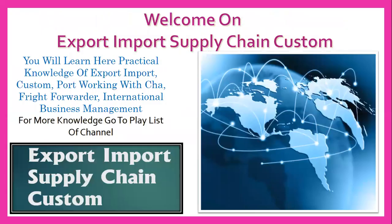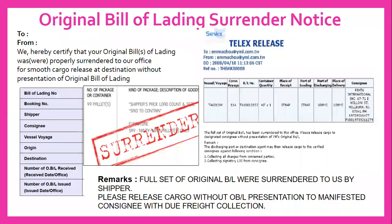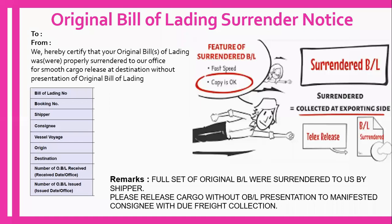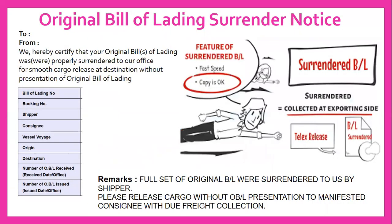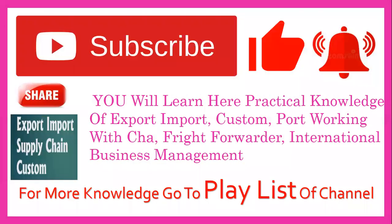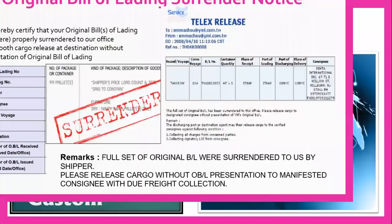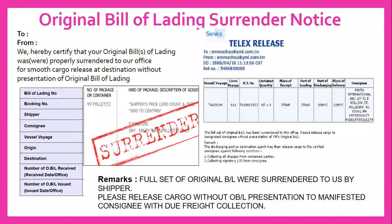Such kind of problem can be resolved by BL surrender. In this case, what we will do is surrender the bill of lading to the origin shipping line office. Then the origin shipping line office will send a telex release to the destination shipping line office.